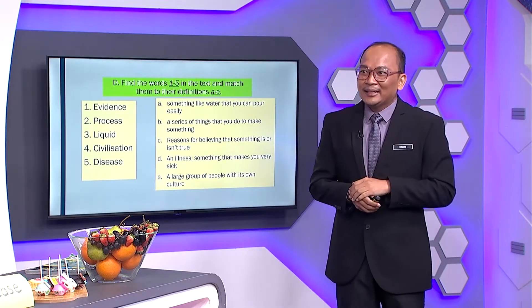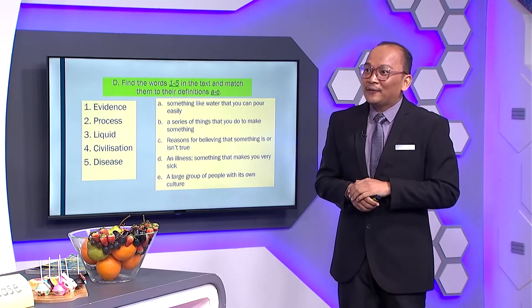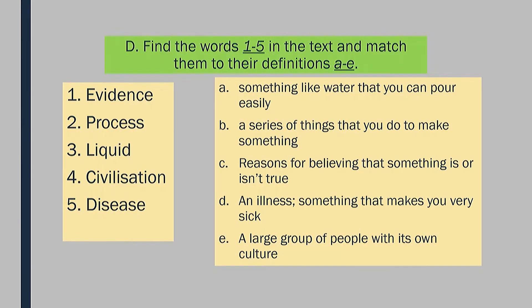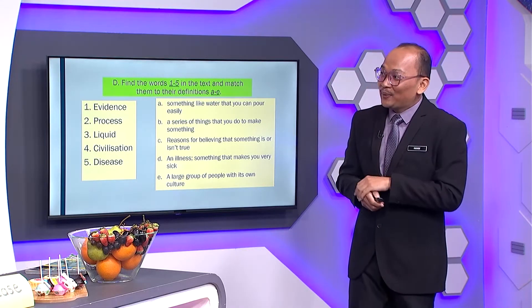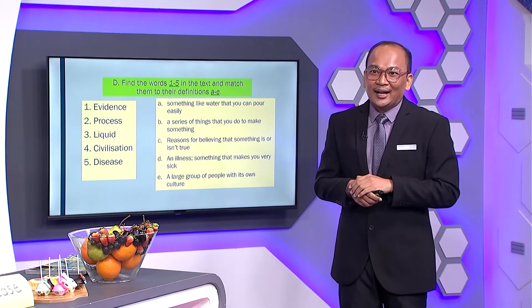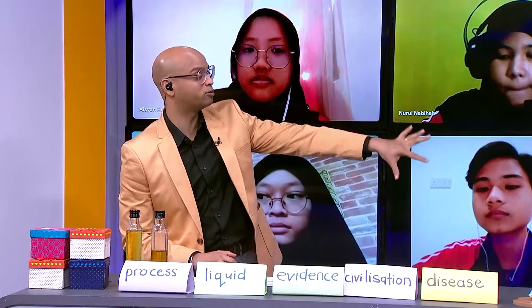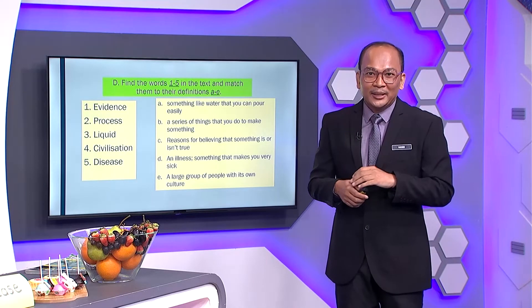Now, what our pupils at home need to do is find words one to five in the text — we've already done that. Now we are going to match them to their definitions. The definitions are already prepared here from the textbook, so pupils just need to match the correct answers. We are going to let our friends at home search for the meanings for a while. Remember, from the list of five words, we already have the definitions — we just have to match them. Pupils at home, are you ready? Give us a thumbs up if you are.